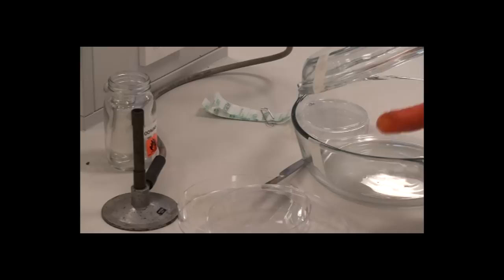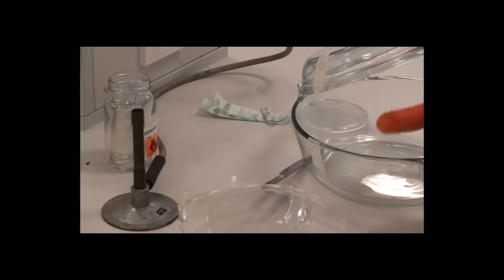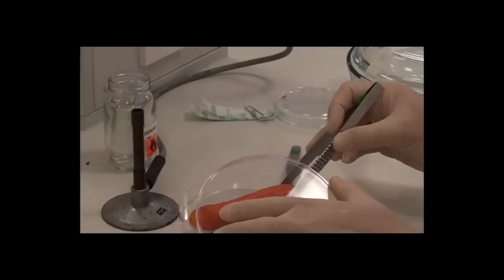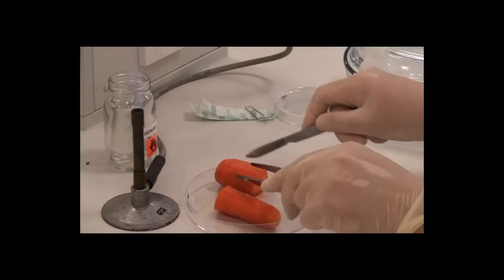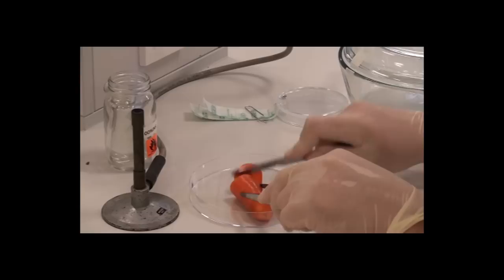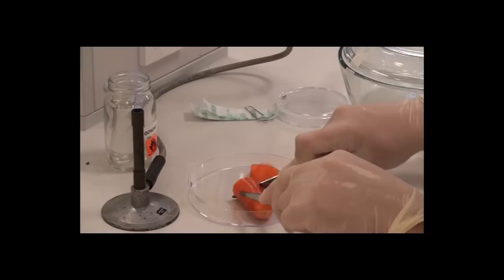I'm getting the carrot out of the jar, where it's been sterilized and washed, sterilized in bleach and washed, and now I'm putting it into the sterile petri dish here, and we'll then slice it into discs. Put that piece aside, and cut the discs, about five millimeters thick.